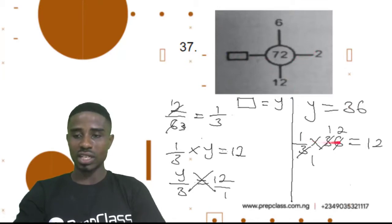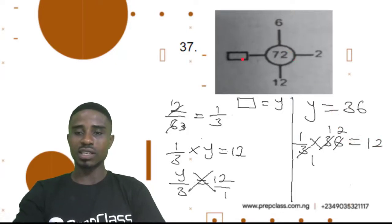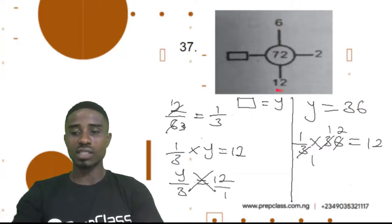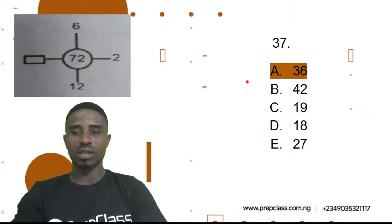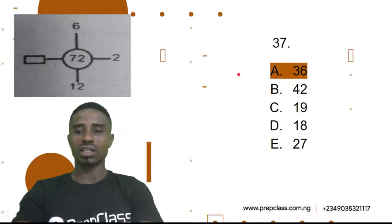That means 2 divided by 6 gives me 1 over 3. And 1 over 3 times 36 gives me 12 — because 3 divides into 36 twelve times, giving us 12. Our correct answer is 36. So, 36 is here because 2 divided by 6 is 1 over 3, and 1 over 3 times 36 gives us 12. Question 37, option A — 36 is our correct answer.